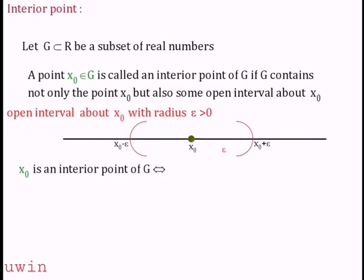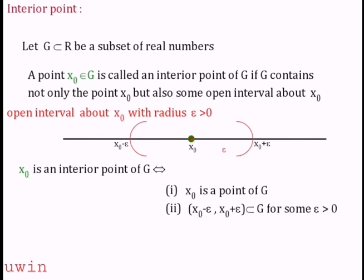X-naught is the interior point of G. The first condition is that the point is in the set. The second condition is that there is a small interval — x-naught minus epsilon to x-naught plus epsilon — an open interval contained in G, for some epsilon positive. This is the interior point definition.